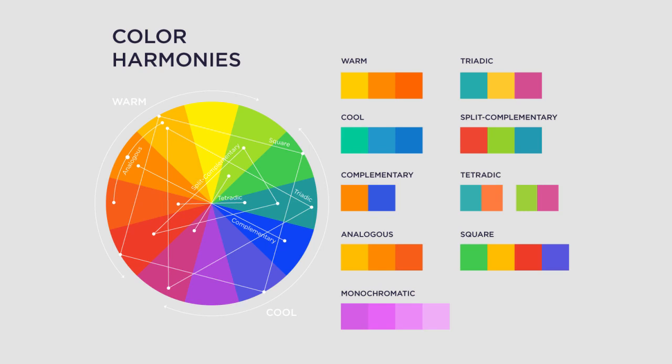Usually with analogous harmony, one of the three colors predominates. One of the most popular color schemes is based on complementary colors, considered one of the main fundamental rules in graphic design. In this harmony, colors that are opposites on the color wheel are combined to create maximum contrast and stability. Now that you are armed with this creative knowledge, you will be able to choose the correct colors for your projects and amaze your audience.